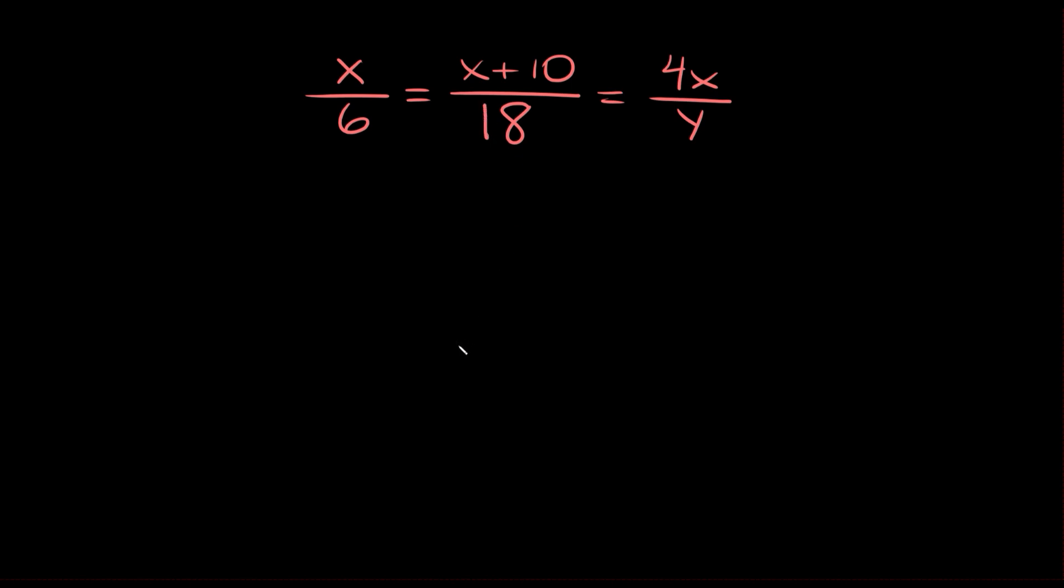To solve a proportion all you need to do is cross multiply. The first thing we're going to do is multiply our first cross which is x times 18. So let's write that down, x times 18 or 18x, and we're going to set that equal to our other cross, which is 6 times x plus 10.